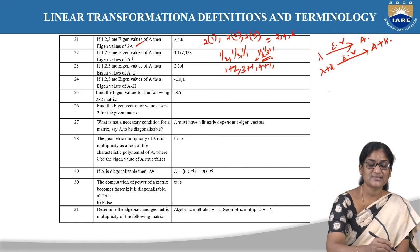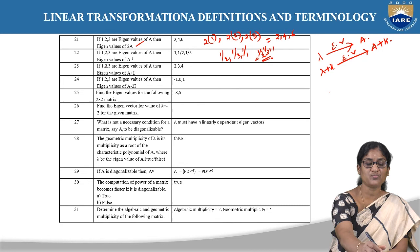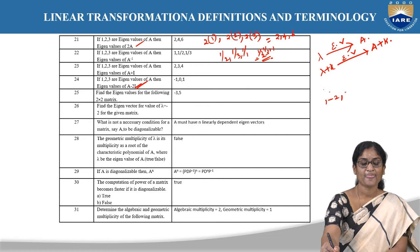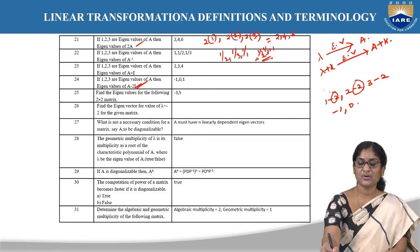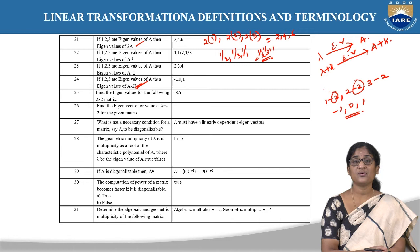If 1, 2, 3 are the eigenvalues of A, what are the eigenvalues of A − 2I? Subtracting 2 from each eigenvalue gives 1−2, 2−2, 3−2, that is −1, 0, 1. There is no need to compute A − 2I explicitly — using the property, we can directly get eigenvalues of any algebraic expression of A.